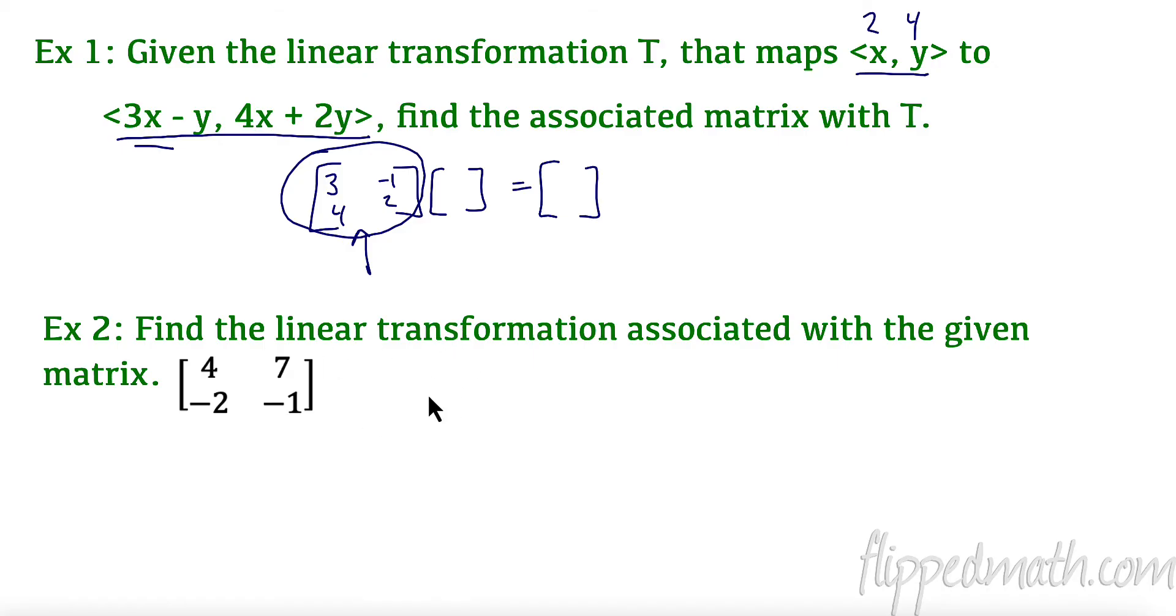Let's try the reverse way now. Let's say we know our associated matrix. We want to find what the transformation is. So when we write this transformation out, we need to say it's our x, y, and it's going to map it to our new transformation. Let's see. Our x component has a 4x and a 7y. So 4x plus 7y. And our y component has a negative 2x and a negative y.